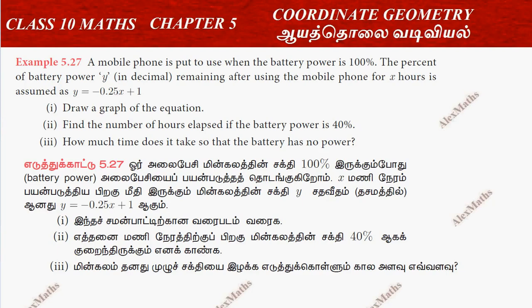Hi students, this is Alex here. Example 527. A mobile phone is good to use when the battery is 100%. The battery power is 100%.